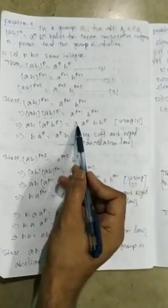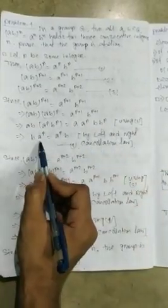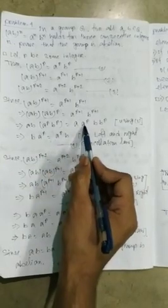Now using left and right cancellation law, we can omit a from one side and b from another side.